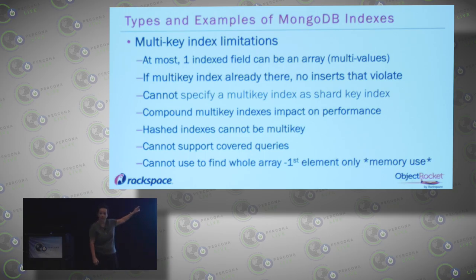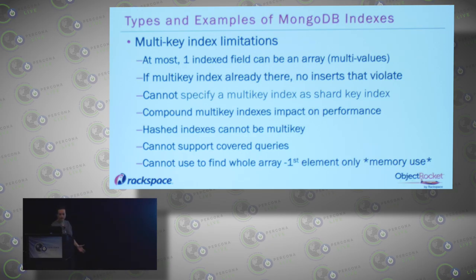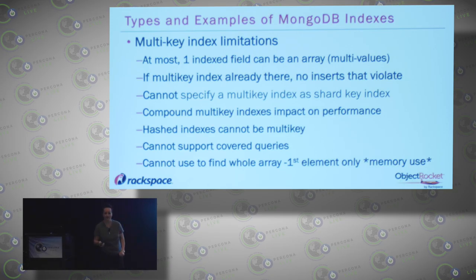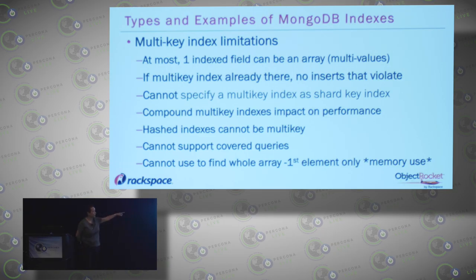Other considerations for multi-key indexes: one and only one field in a compound index can have the multi-key on it. If one already exists, your insert will fail to that element. It can't be a shard key. They're going to impact performance not only when you're putting data in but also when updating and pulling data out. Also, when you index an array it treats each element differently in terms of storage and space consumption. You have to worry about memory when you pull it back, disk size, and — if it's not a compressed engine — fragmentation from every update to that array.